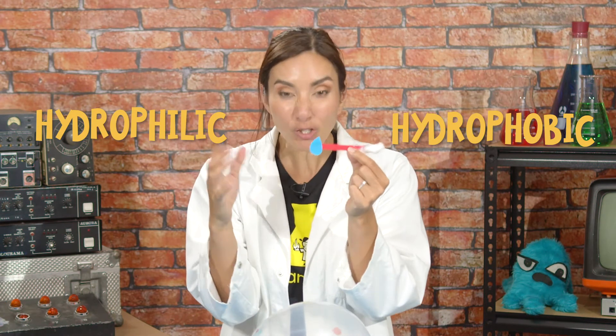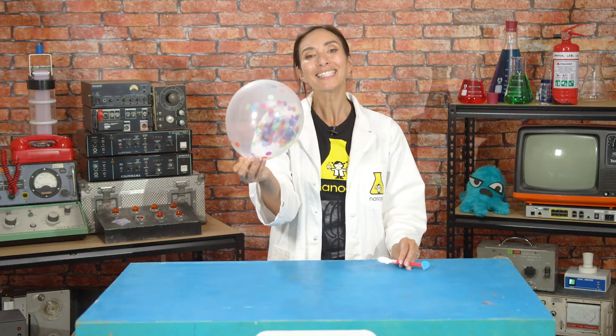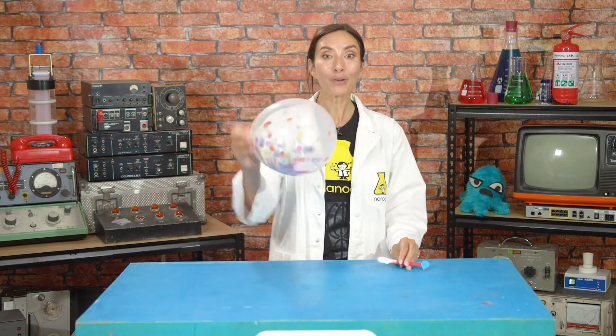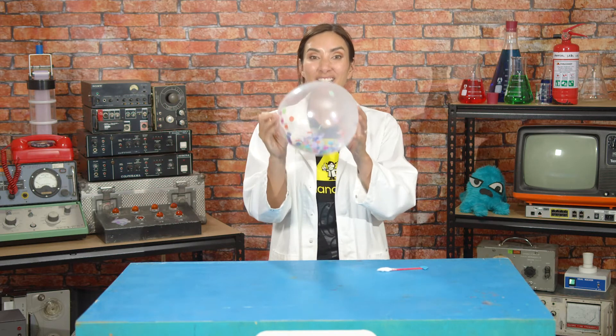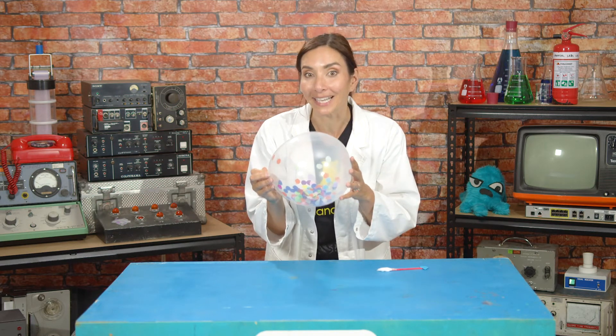Now coronaviruses are a special type of virus that they have a fat layer on the outside. Let's imagine that this balloon is the coat and all the confetti on the inside of the virus is basically the insides of the virus.